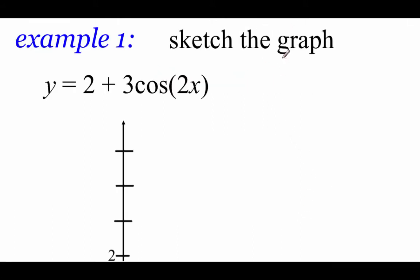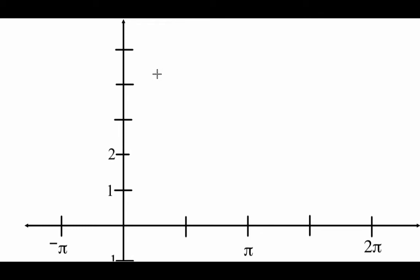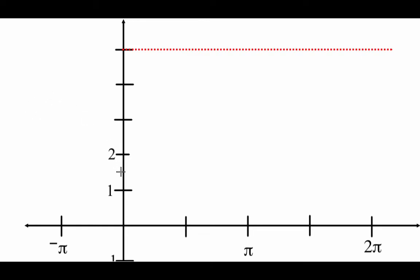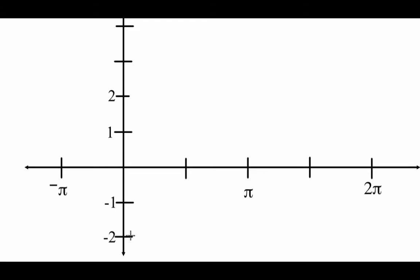We're still going to do all that same stuff with a, b, and c, but now we include this extra d value. The a value out in front is 3, so the amplitude is 3. The d value is positive 2, so that moves us up 2. Normally we'd go up to 3 for the maximum and down to negative 3 for the minimum, but we shift both up 2 units — so the maximum is 5 and the minimum is negative 1.